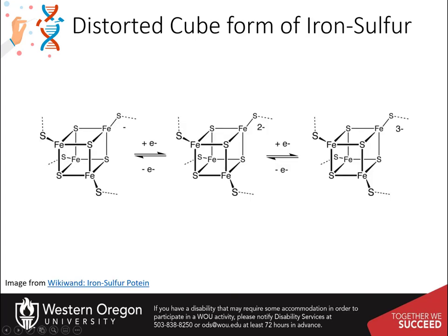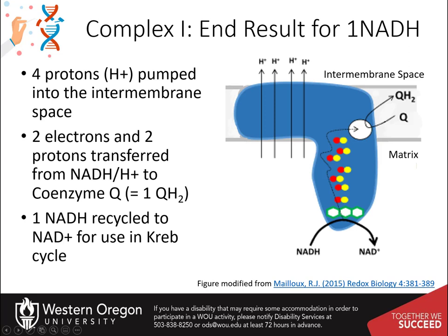Here is another diagram of the cube form of the iron-sulfur complex, shown accepting one, two, or three electrons. In conclusion, the activity of complex I, elicited by one NADH molecule, yields four protons pumped into the intermitochondrial space, the generation of one fully reduced coenzyme Q molecule, and the recycling of reduced NADH to oxidized NAD+ for reuse in the Krebs cycle.